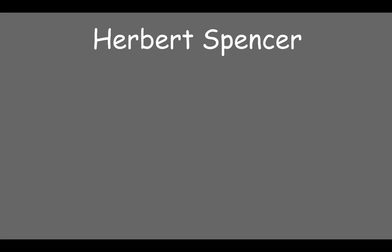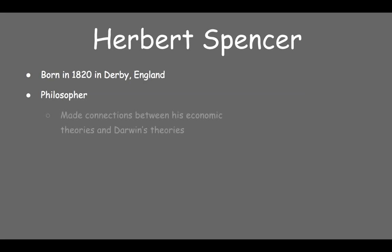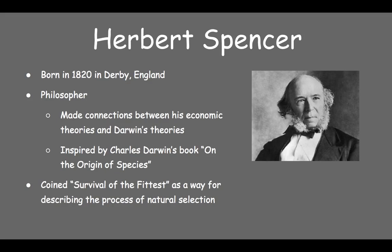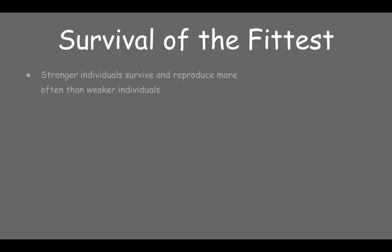You will need to know who Herbert Spencer is and what he did. He was an English philosopher born in 1820 who made various connections between his economic theories and Charles Darwin's biological and evolutionary ones. Spencer was initially inspired by Darwin's On the Origin of Species and is considered the most influential philosopher regarding the application of Darwin's ideas in social evolution. Spencer adopted the phrase 'survival of the fittest' as a way of describing the mechanism of natural selection, which most of you probably remember from a biology class.